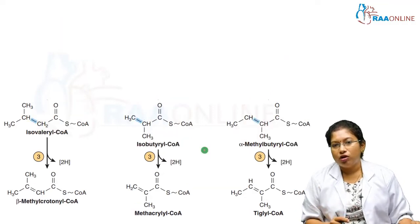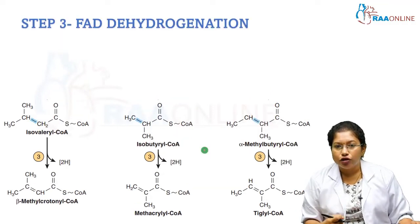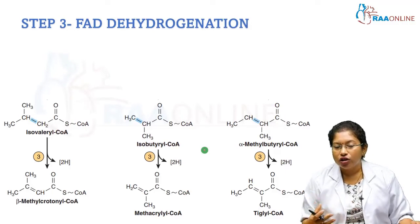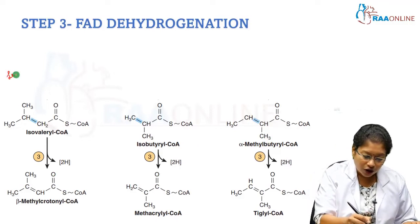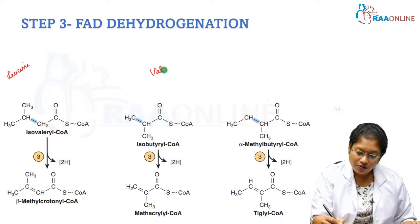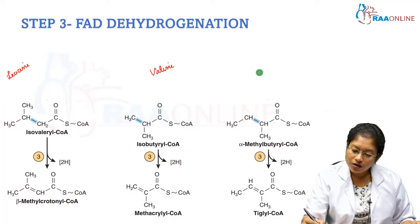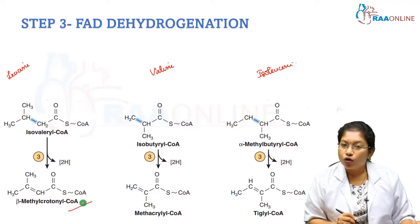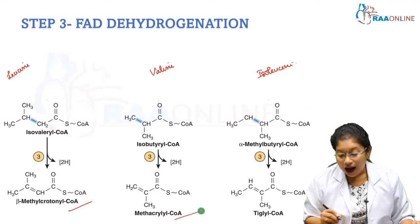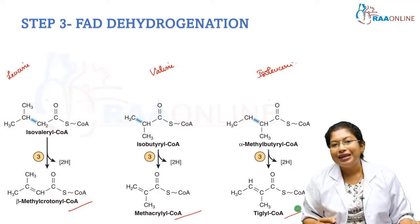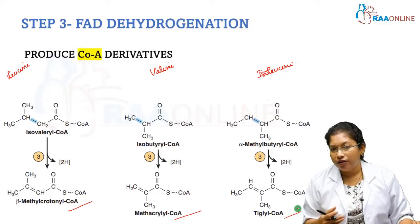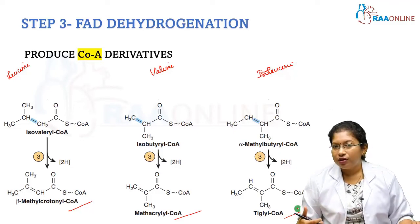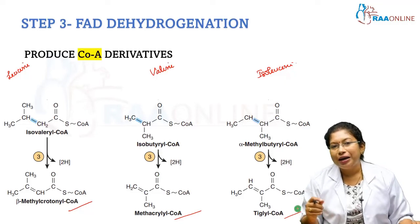The third step in the metabolism is FAD dehydrogenation. All these CoA derivatives undergo FAD dehydrogenation. For leucine metabolism, the compound formed is beta methyl crotonyl CoA; for valine metabolism it is methyl acrylyl CoA; and from isoleucine you get tiglyl CoA. They all produce CoA derivatives by FAD dehydrogenation. The rest of the steps of each metabolism are independent reactions.